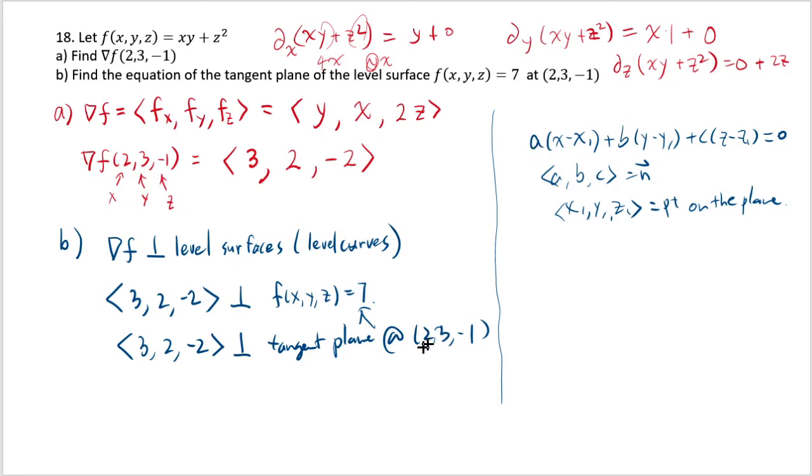And we are already given the point. This has to be on the plane. And we already have a normal vector because this vector is perpendicular to the tangent plane. And therefore, we can just make use of this right away and write the answer 3(x - 2). So I'm using 3, 2, negative 2, and 2, 3, negative 1. So 3x minus 2, and then 2(y - 3), and then negative 2(z - negative 1). So it's negative 2(z - negative 1) equal to 0.